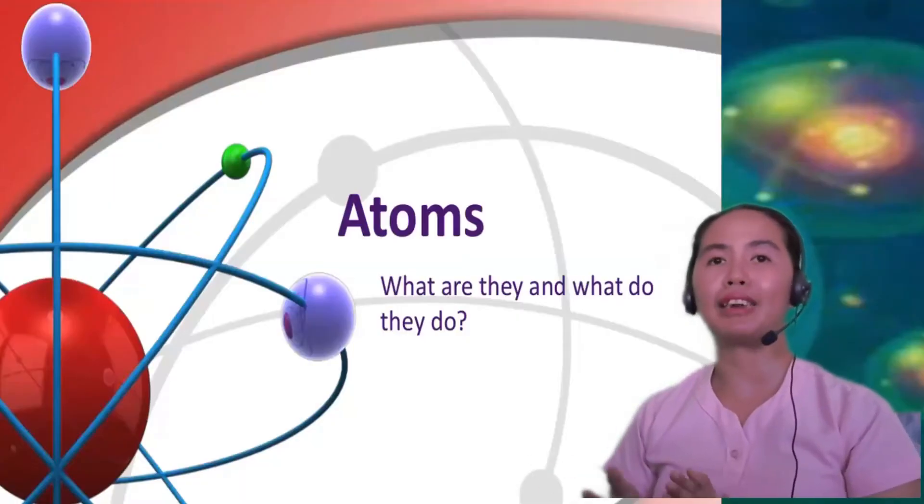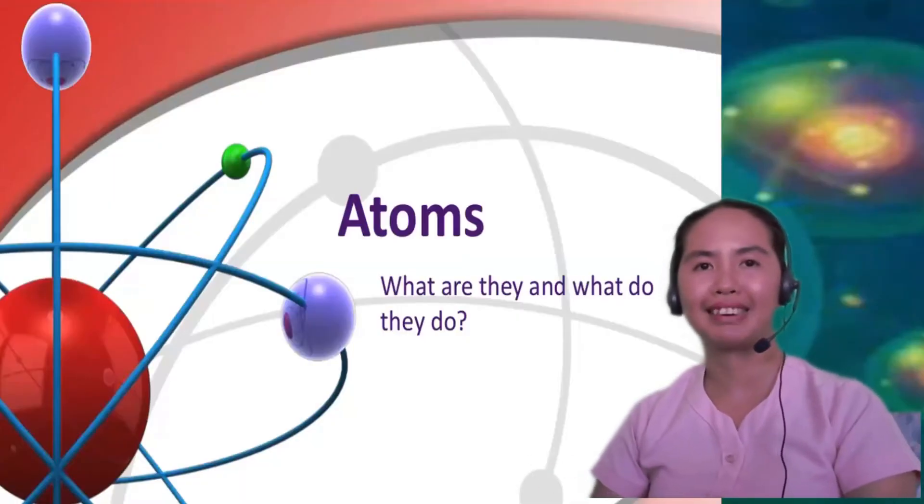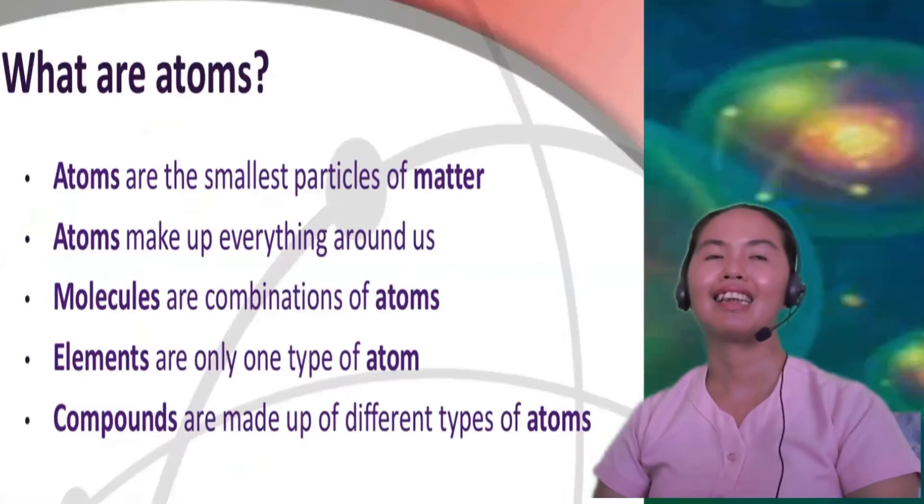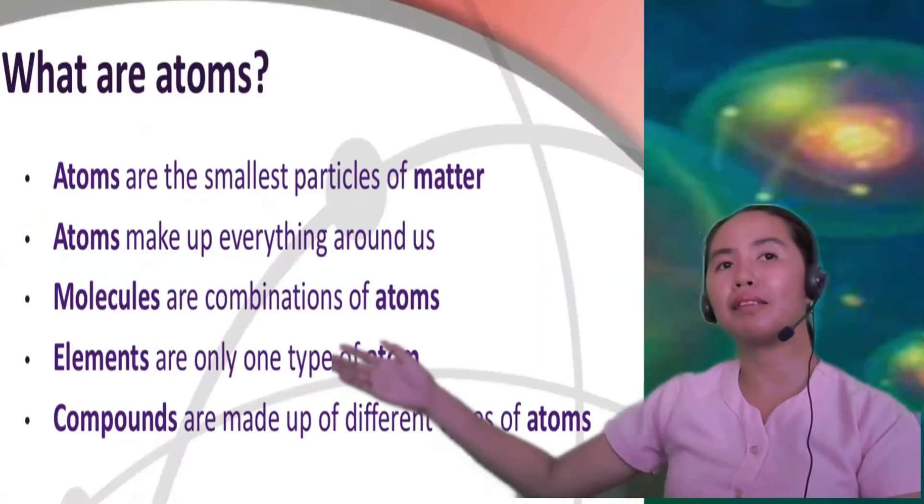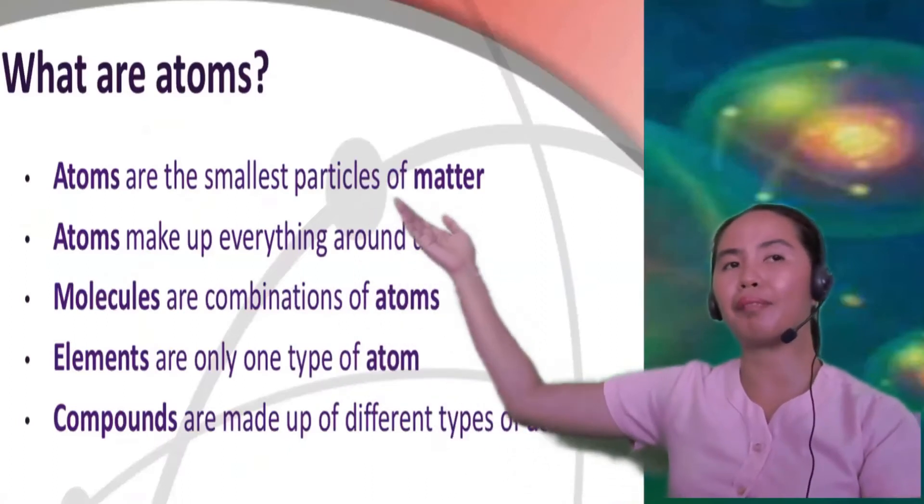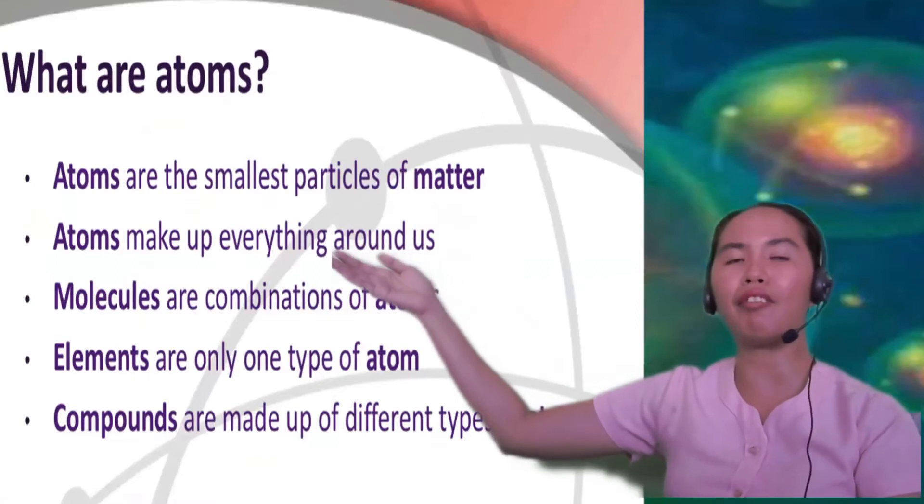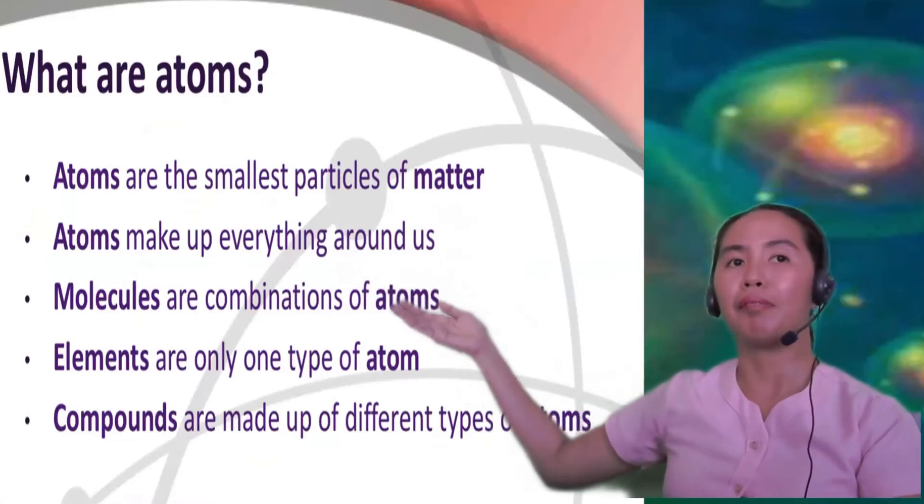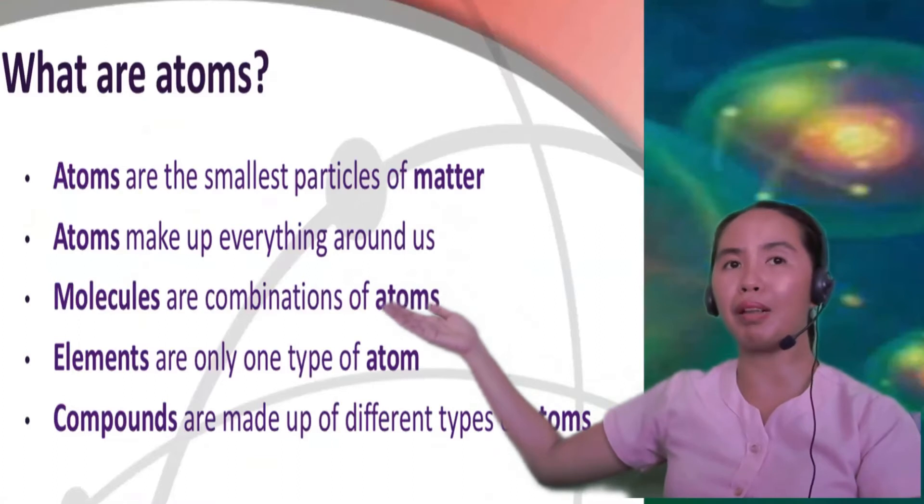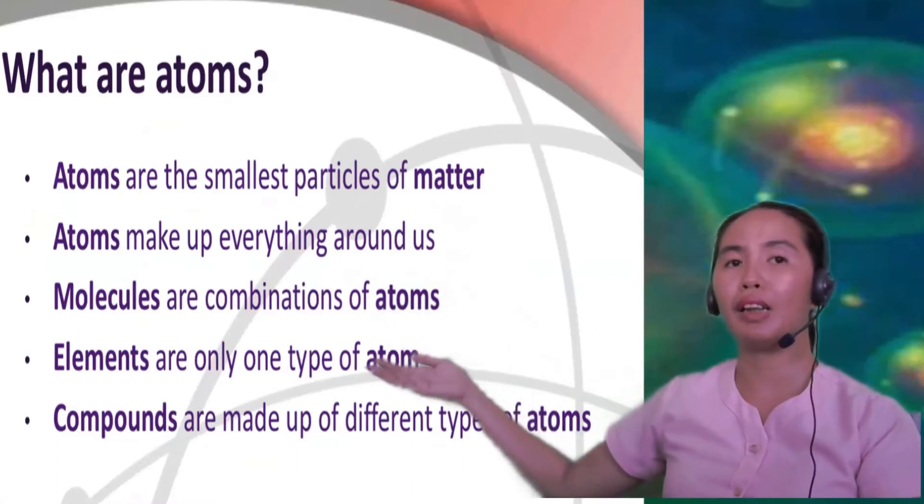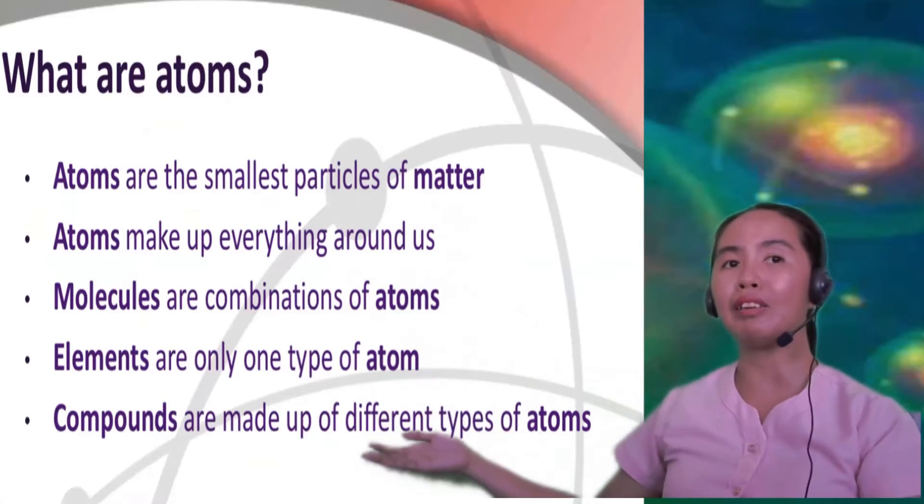So what are atoms and what do they do? Atoms are the smallest particle of matter. Atoms make up everything around us. Molecules are known as the combinations of atoms, while elements are only one type of atom. Compounds are made up of different types of atoms.